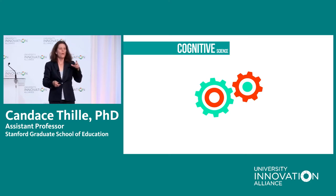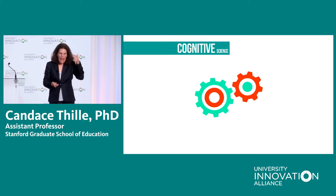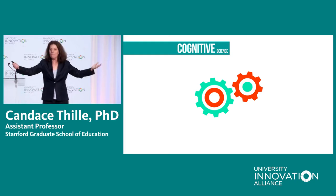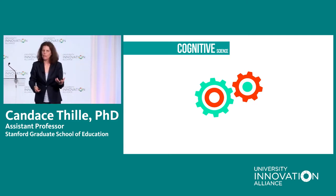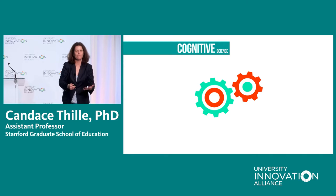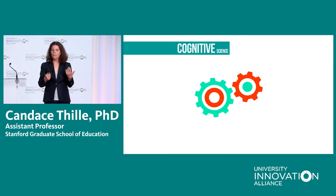Even within cognitive science, we have findings counterintuitive to how we currently teach. How many of you explain something and then give examples to illustrate the principle? That's a very common pedagogical move — and I'm doing it right now. But it turns out that on average, for more complex principles, it's actually better to give learners a couple of examples rather than explaining the principle and then giving them the example.